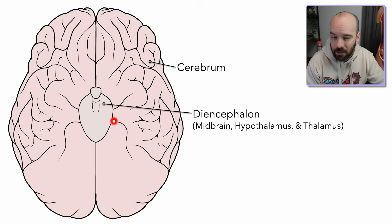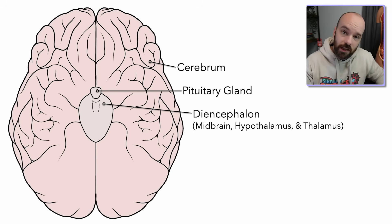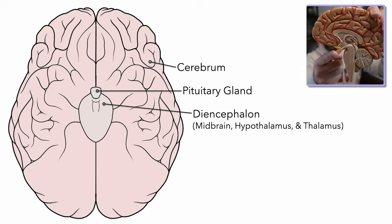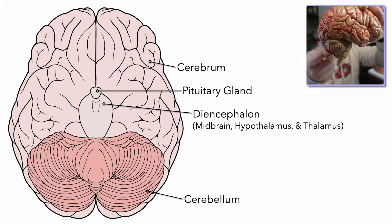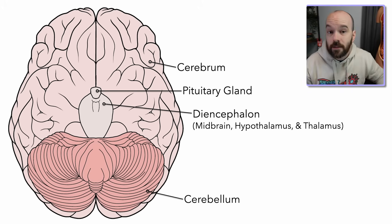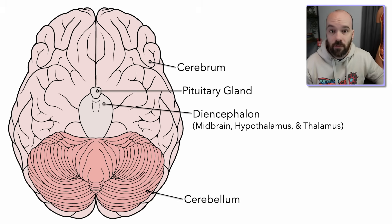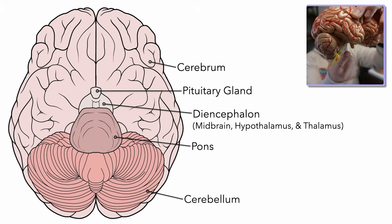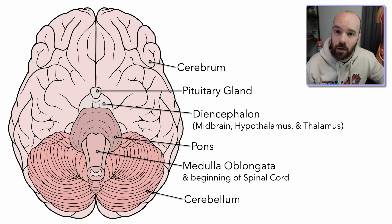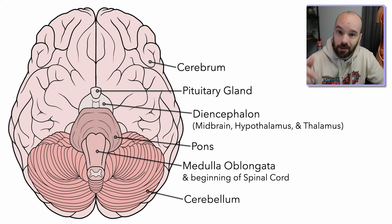Next, we have the pituitary gland, which is sticking off the bottom of the diencephalon — we can see that right here in our model. Next, we have the cerebellum, sticking off the posterior and inferior side of the brain. Connected to the midbrain of the diencephalon, we've got the pons. And then connected to the bottom of the pons, we have the medulla oblongata, which forms the beginning of the spinal cord as well.